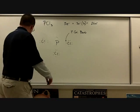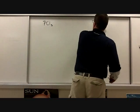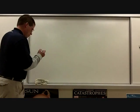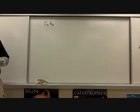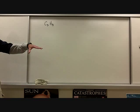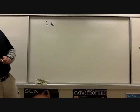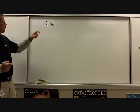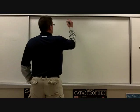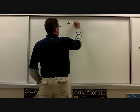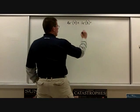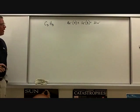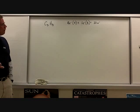Next example: C3H8. Does anybody remember what that's called? Propane — that's the one in the chubby cylinder under the grill. Step one: carbon brings four valence electrons; we have three carbons, so 3 × 4 = 12. Hydrogen brings one electron; we have eight, so 8 × 1 = 8. Total: 12 + 8 = 20 electrons.